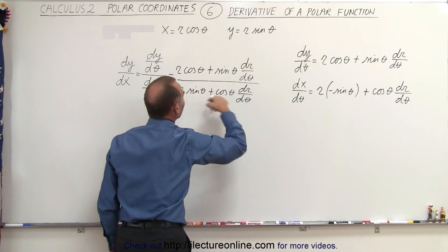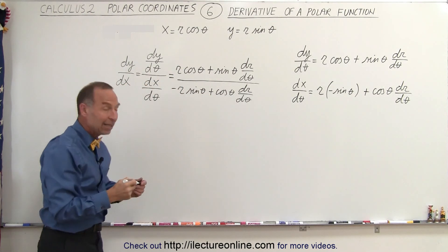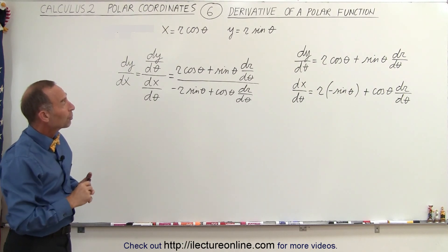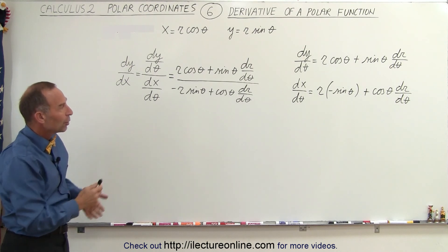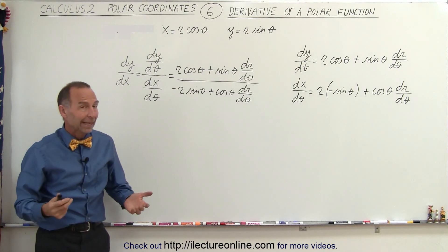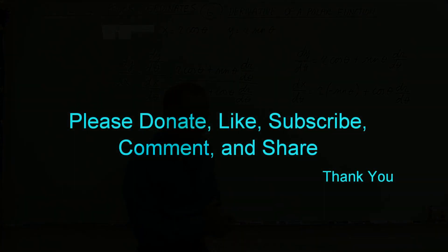And this then becomes the derivative of y with respect to x in polar coordinates. So that's how we approach that. We'll see some more examples of that in the future, but at least now you know how to go about finding the derivative in polar functions when they are defined in terms of r and theta. And that's how it's done. Thank you.